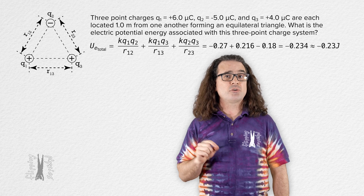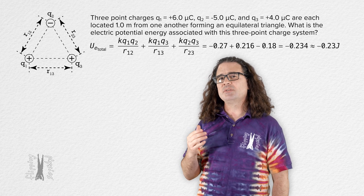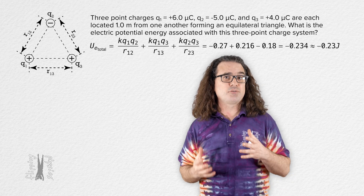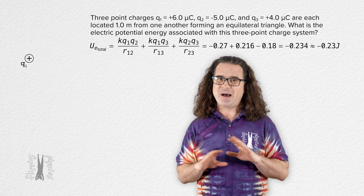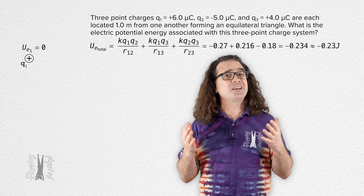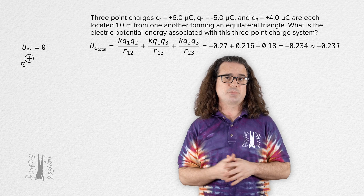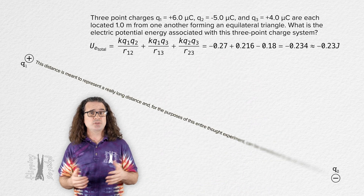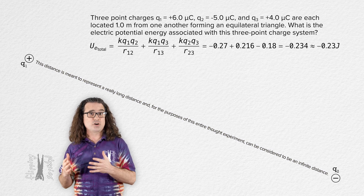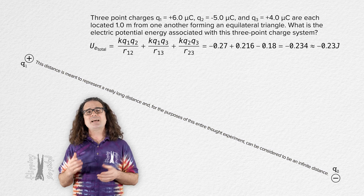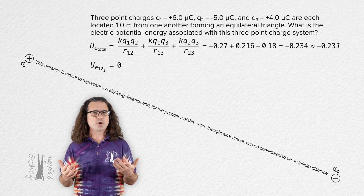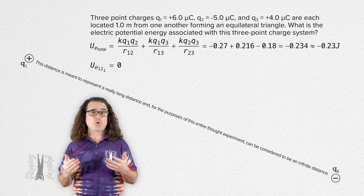Recall that potential energy is stored energy which depends on the relative positions of various parts of a system. To find the electric potential energy of the three-charge system, let's start with charge one by itself — a single object in the universe which has zero electric potential energy, because it takes more than one charge to store electric potential energy. If we add charge two to the system at an infinite distance from charge one, the two-charge system still has zero electric potential energy, because the charges are infinitely far from one another and therefore have zero effect on one another.